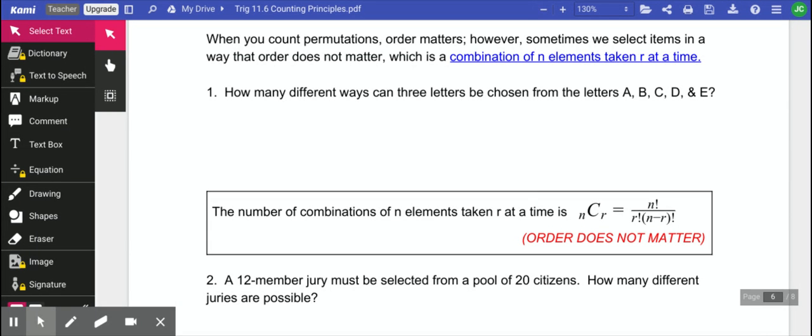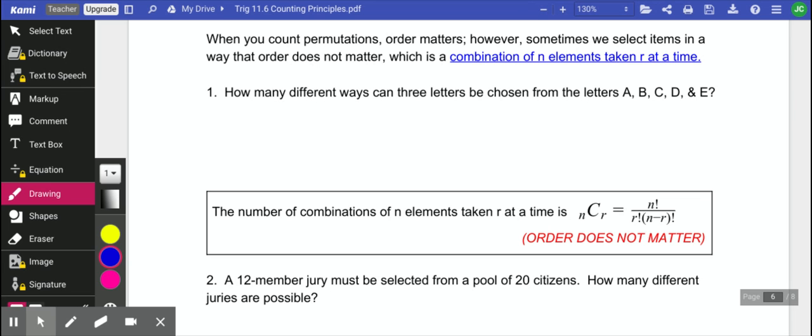When we count permutations, order matters, but sometimes when we take things, order doesn't matter. So we call that a combination. The number of combinations is always less because the order doesn't matter.